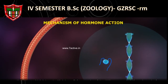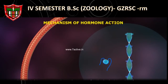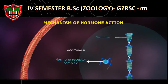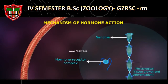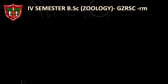Hormones which interact with intracellular receptors — called steroid hormones, iodothyronins, etc. — form a hormone-receptor complex that acts on genomes. The cumulative biochemical actions result in physiological and developmental effects.